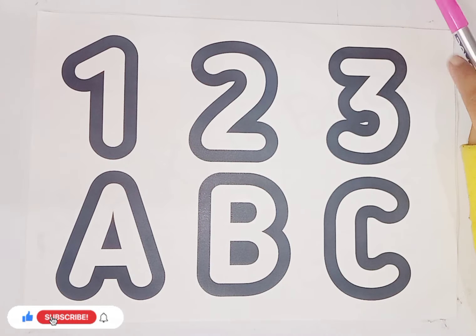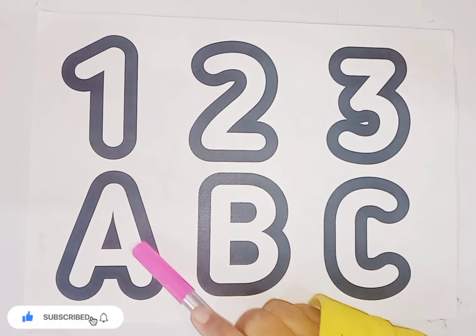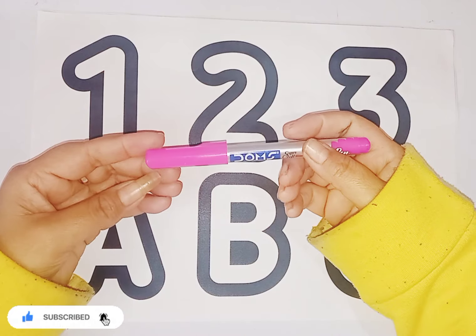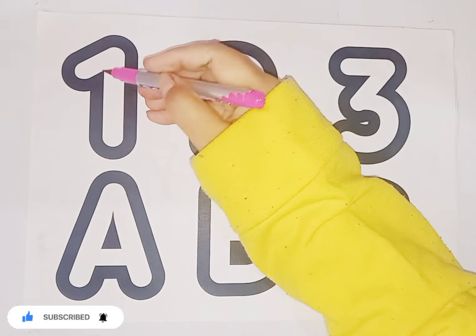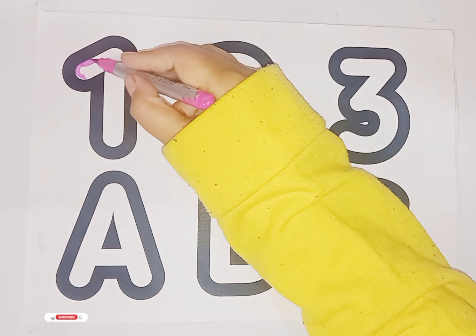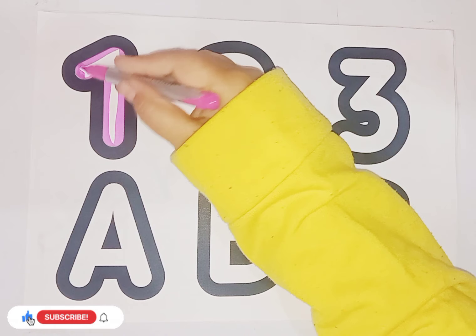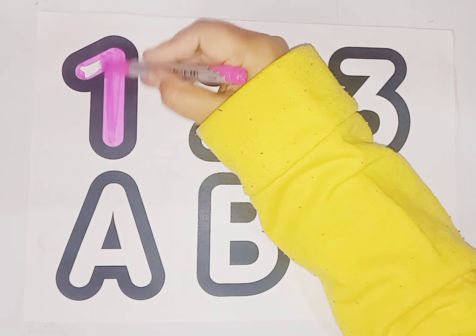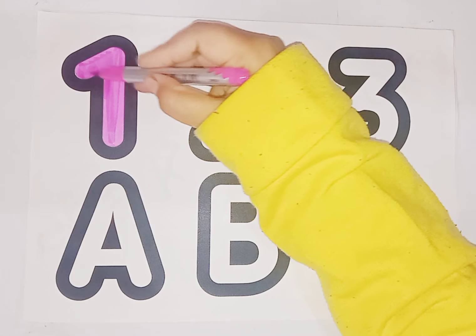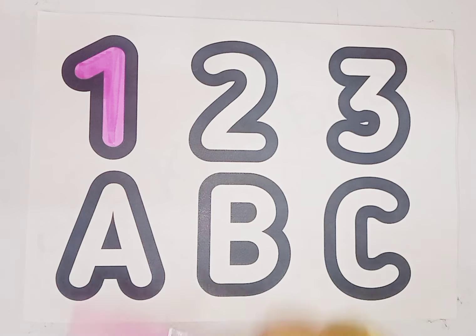So kids, today we learn numbers and alphabets. This is pink color and number is 1. O-N-E, 1. O-N-E, 1. This is number 1.